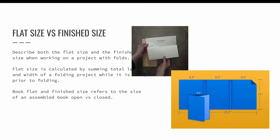A good example that happens a lot in the printing industry is that someone will ask for a quote to print something like an eight and a half by eleven tri-fold brochure. Does this mean they want an eight and a half by eleven sheet of paper folded in thirds like a letter fold, or is each of the three panels eight and a half inches wide? If you describe the flat size and the finished size, your request becomes much more clear. Saying you want a quote for eight and a half by eleven inch tri-fold brochures that are twenty-five point five inches by eleven inches folding down to eight and a half by eleven is very clear.